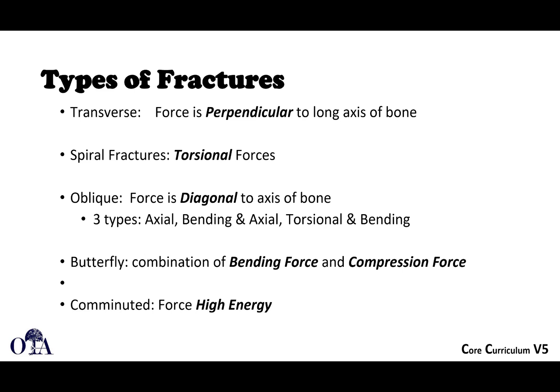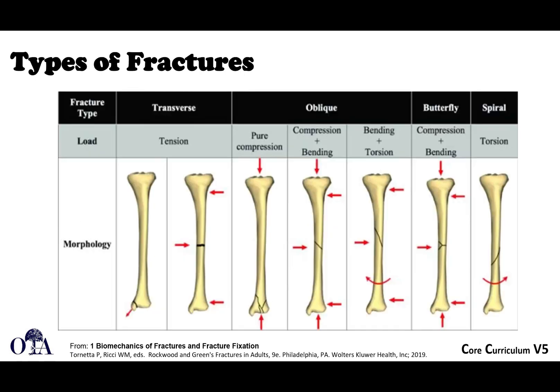A butterfly fracture is a combination of a bending force and a compression force. The bending force typically happens on the tension side, and then the two fracture lines forming the butterfly fragment or wedge fragment are due to compression force on the opposite side. Comminuted fractures are usually high energy.